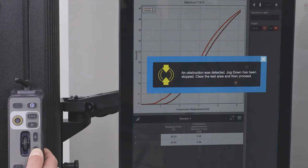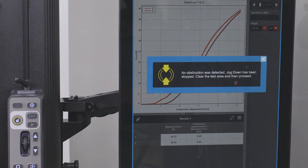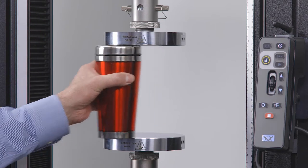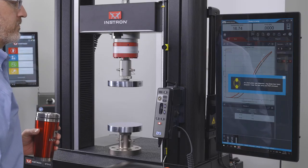By stopping crosshead motion before collisions cause damage, this new feature protects your lab from unexpected downtime and the costs of replacing damaged equipment.